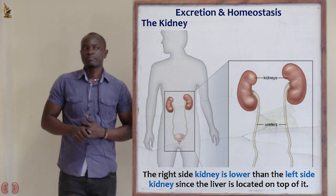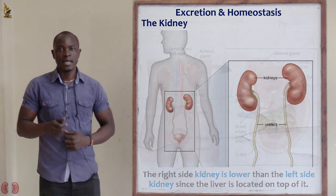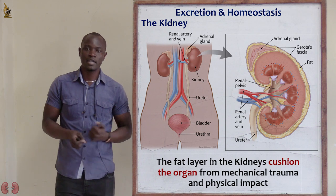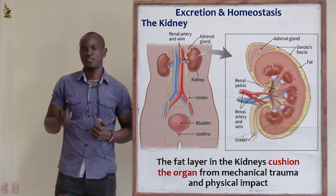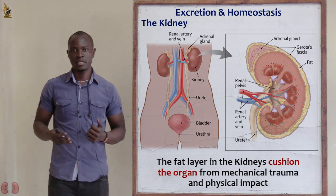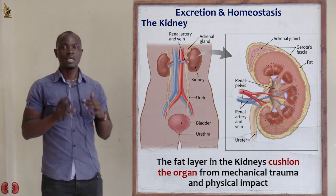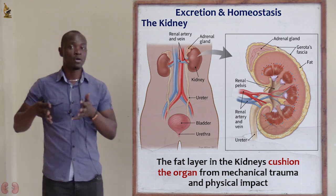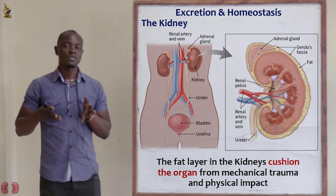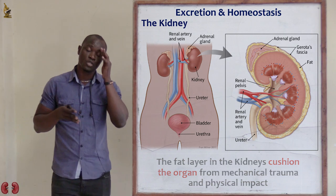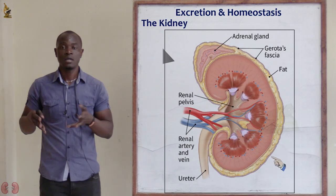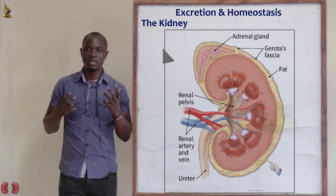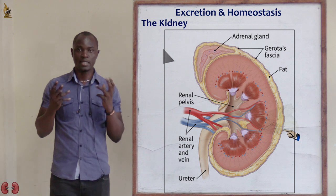The kidney is also surrounded by a layer of fat which helps to cushion it from mechanical or physical injury. This fat layer is very important — if someone experiences trauma on the upper abdominal part, that trauma is not going to directly affect the kidney, because of the thick fat layer that the kidney is suspended in.